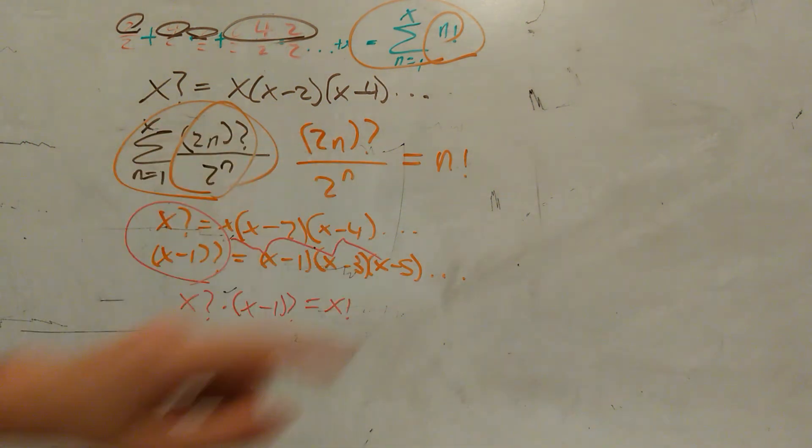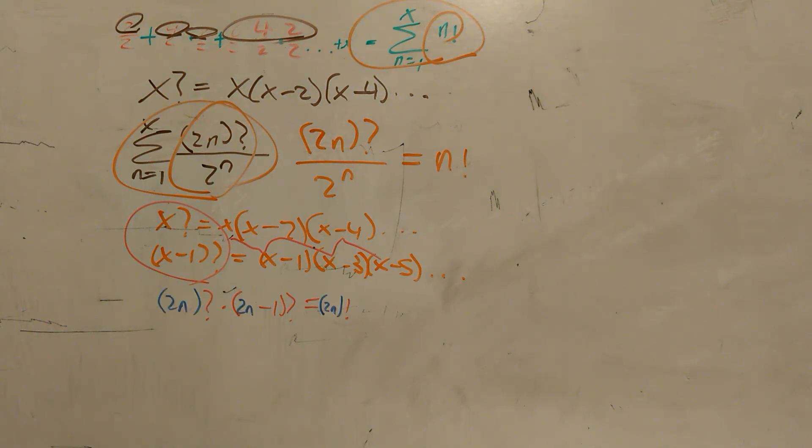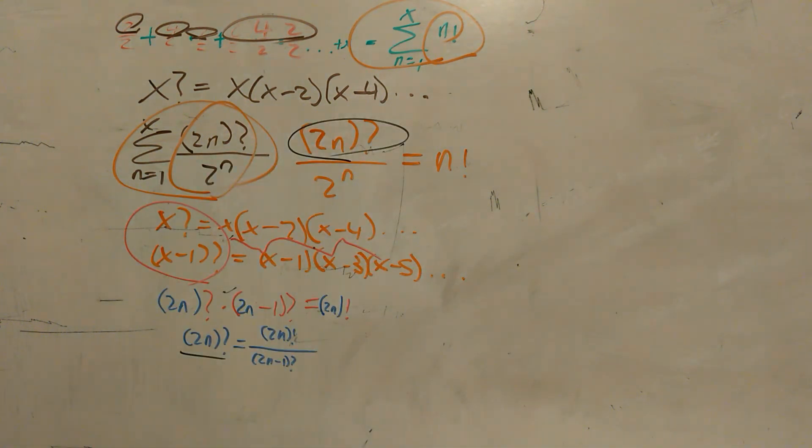Now we're solving for 2n question mark, so we have to replace all the x's with a 2n. And then we want to solve with respect to 2n question mark. Now that we've identified 2n question mark, we can replace it in this original equation.